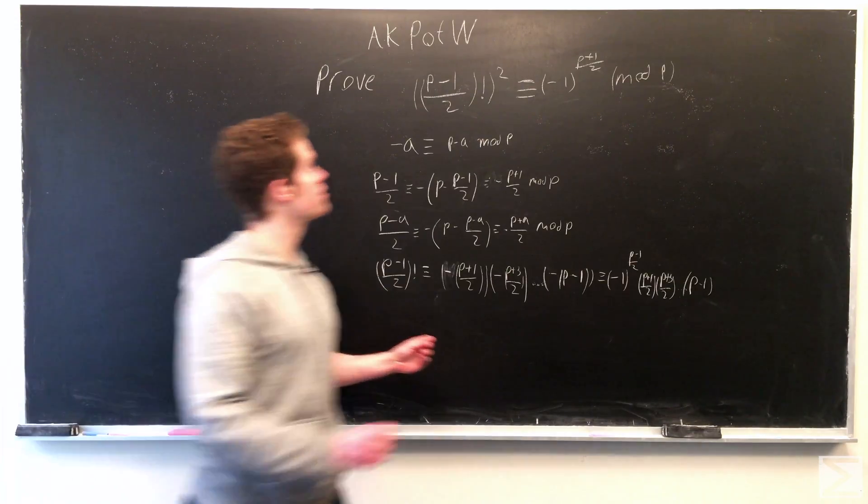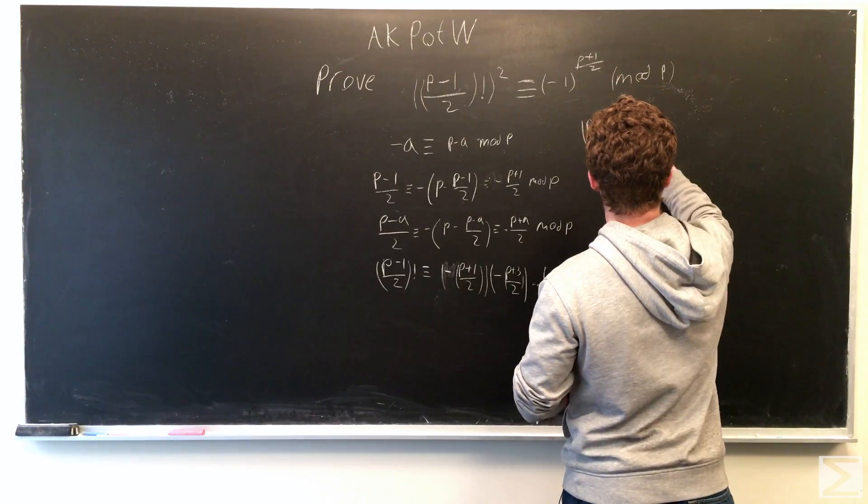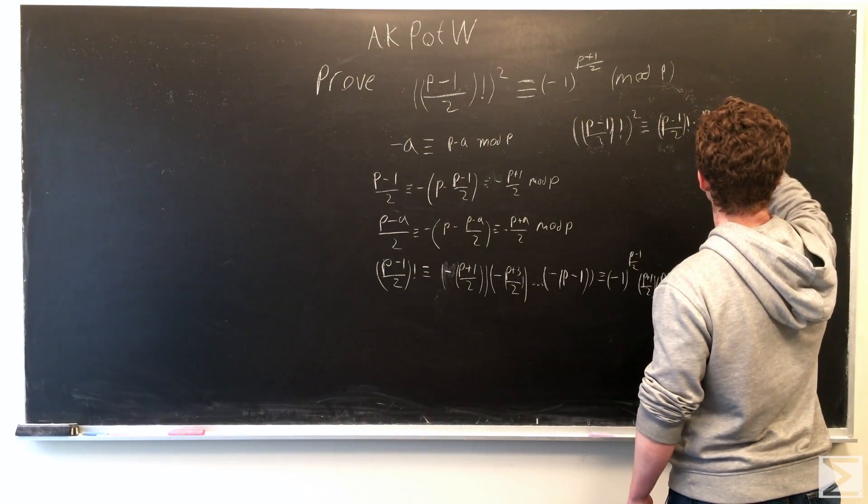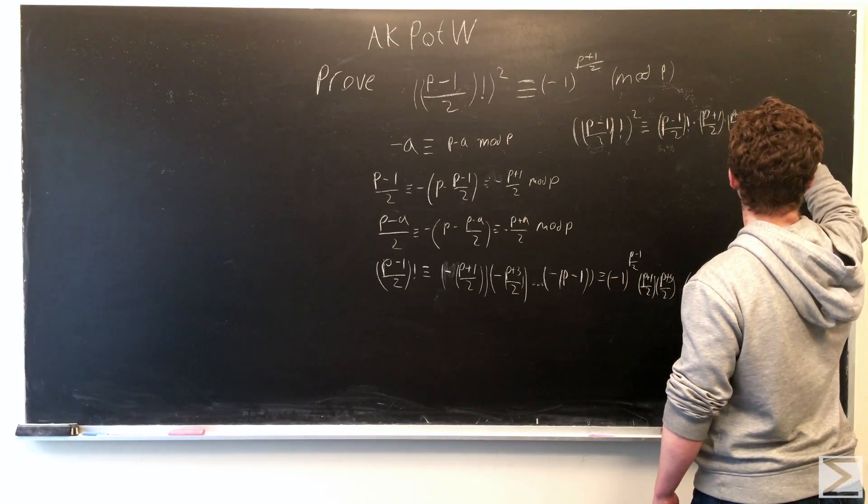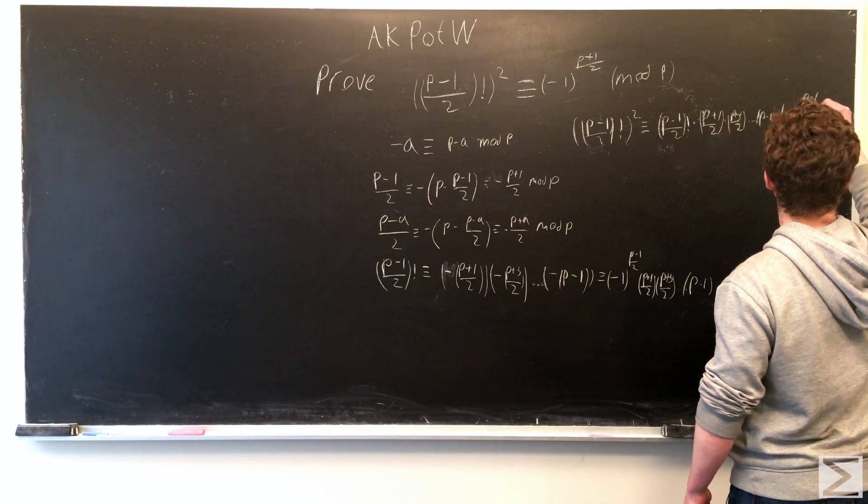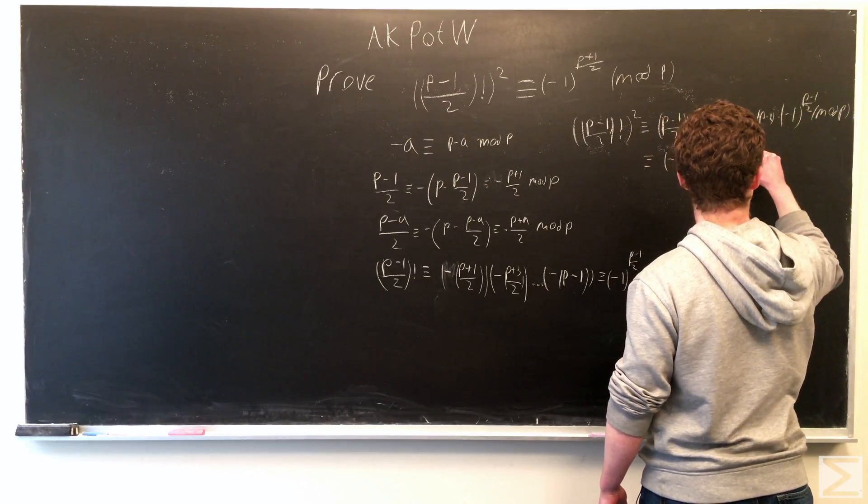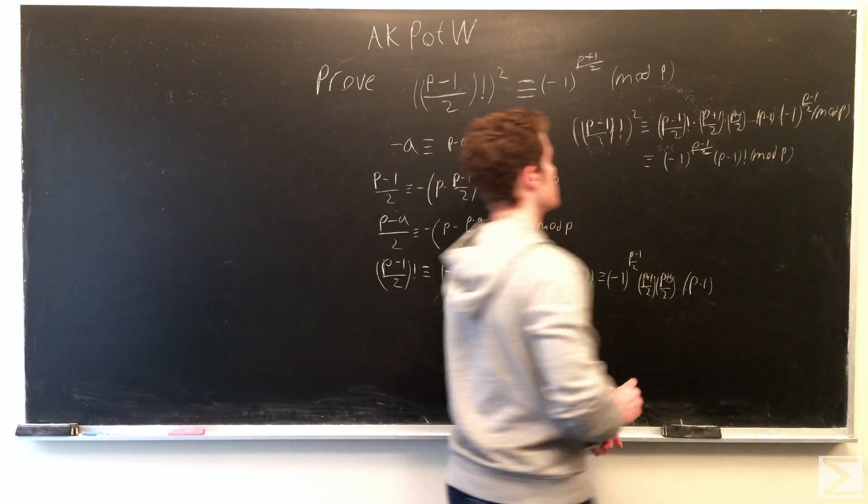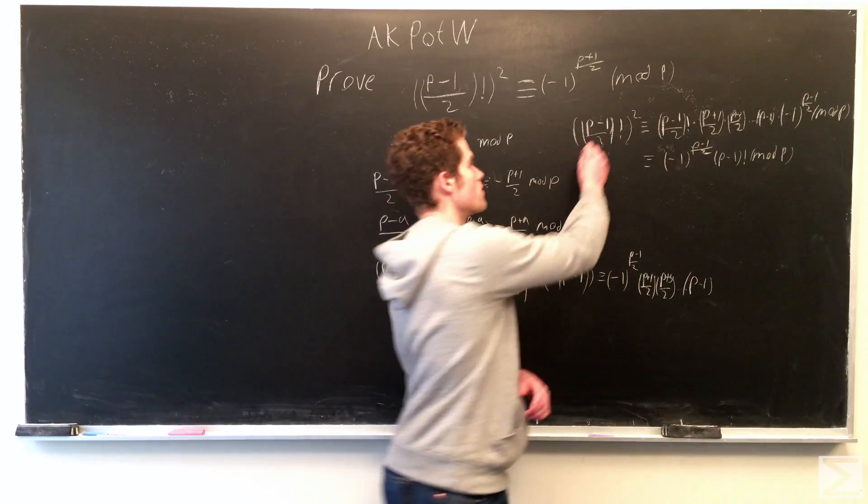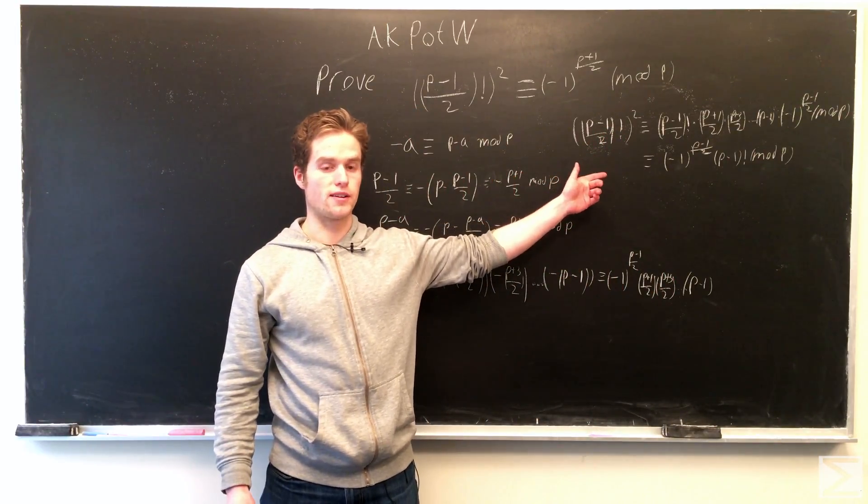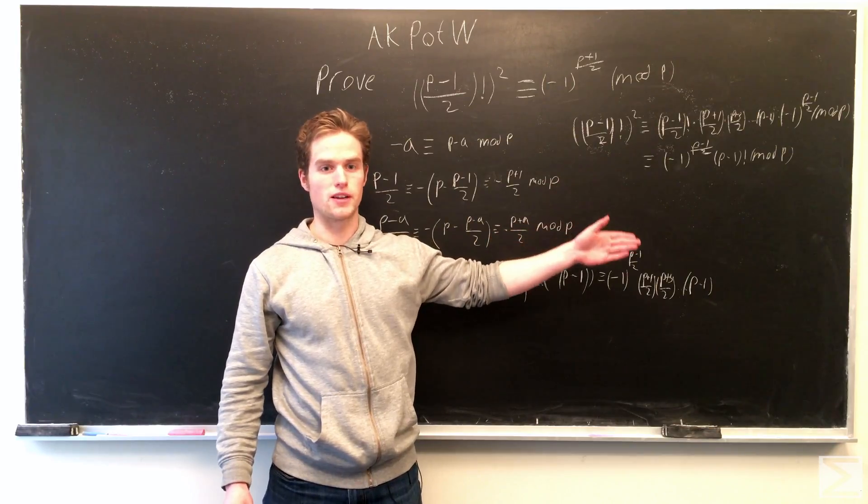So using this, (p-1)/2 factorial squared is (p-1)/2 factorial times (p-1)/2 factorial.